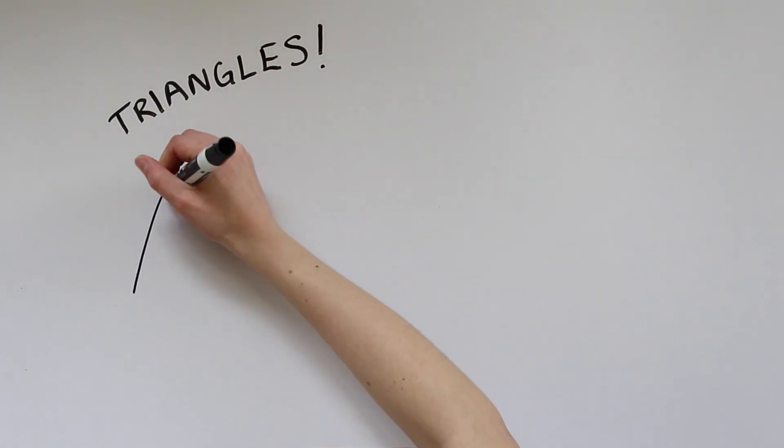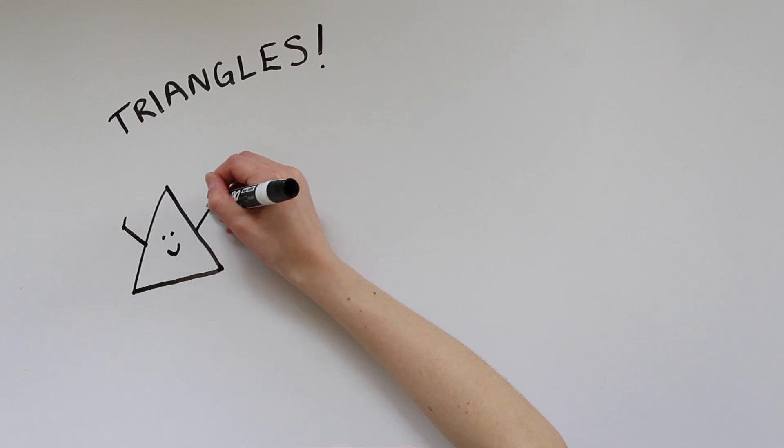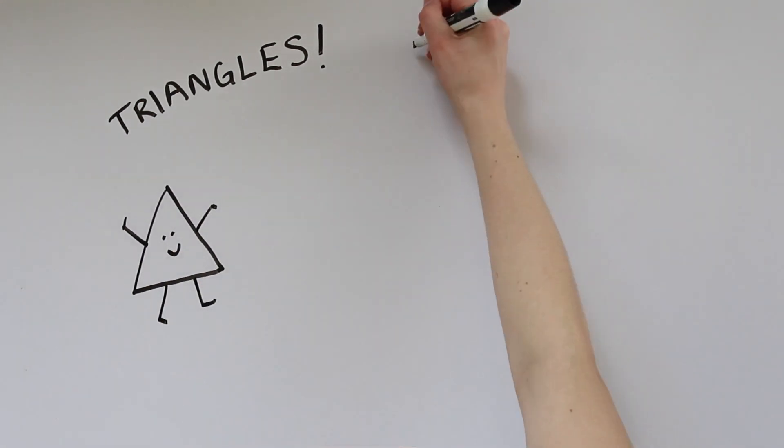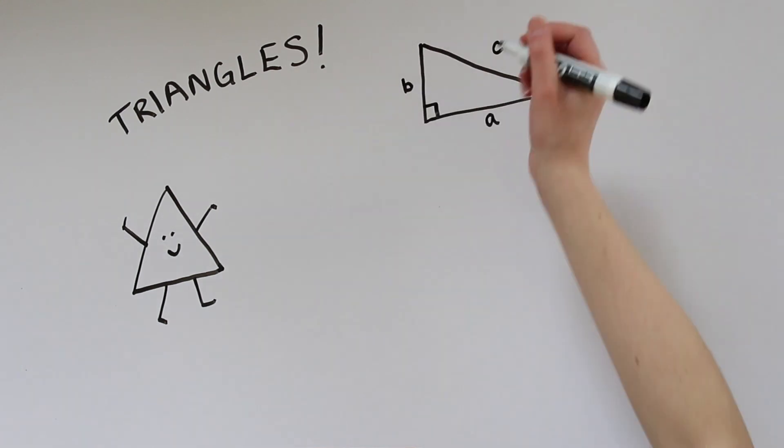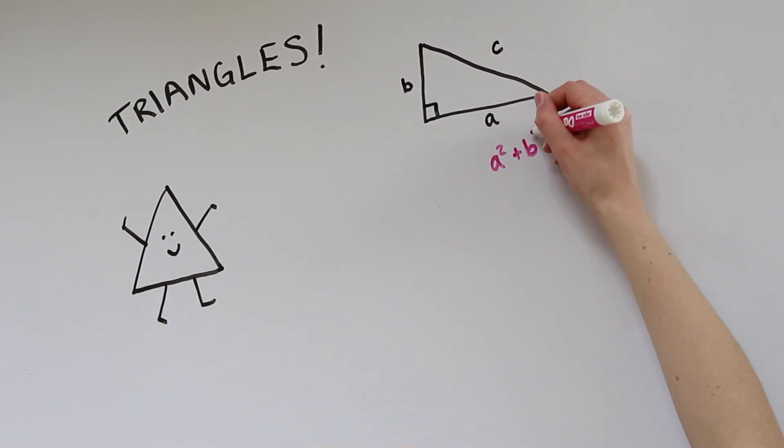Let's talk about triangles! Everyone loves them! There are lots of famous facts about triangles, the foremost of which being the Pythagorean theorem about right triangles: a squared plus b squared equals c squared.